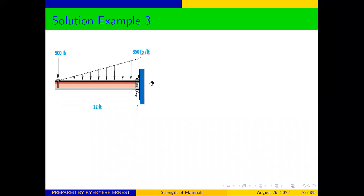Now when you get a problem like this, all that you need to do — you don't need to determine the reactions at the support, because the reaction at the support is just at this one point. If there were other forces here, then we would need the reaction at the support. But since there's only one reaction at the wall, there's no need for determining the support reaction.